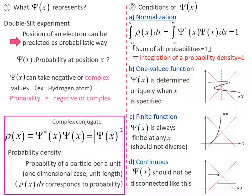In other words, we can only understand where the electron exists in a probabilistic way. Therefore, we speculate that Ψ(x) is related to the probability of the presence of an electron at position x.